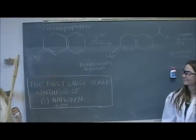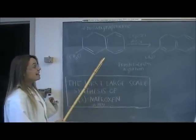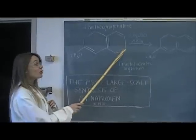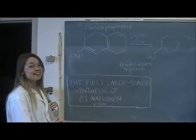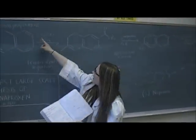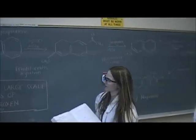This is how S-naproxen is made. First, you start with 2-methoxynaphthalene, and then it undergoes a Friedel-Crafts acylation using aluminum chloride. Friedel-Crafts acylation, we even did that in lab. We even used the same acetyl chloride and added on the same functional group.